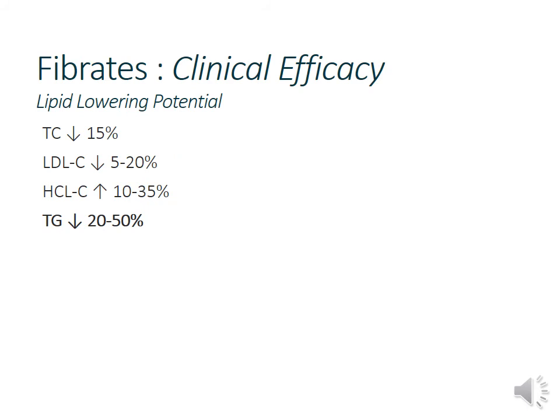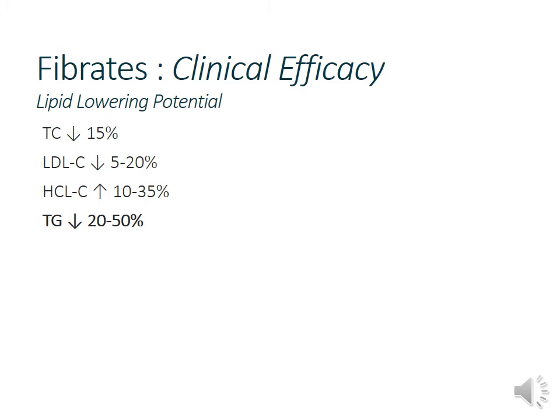Fibrates' lipid-lowering profile: modest total cholesterol decrease; LDL reduction of about 5% to 20%, much less than statins; HDL increase of 10% to 35%, which is notable; triglyceride reductions of 20% to 50% — their claim to fame. Adverse effects include mainly GI upset, but cholelithiasis is unique to this class and can be exacerbated when combined with ezetimibe. Myopathies including potential rhabdomyolysis are also possible, especially when combined with statins.